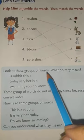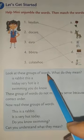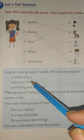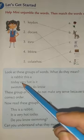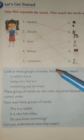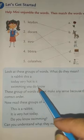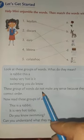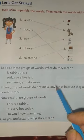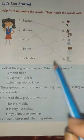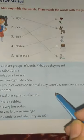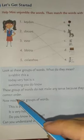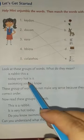Look at this group of words. What do they mean? Is 'Rabbit this'? 'Today very hot is this'? 'Is it swimming?' These groups of words do not make any sense because they are not arranged in the correct order.